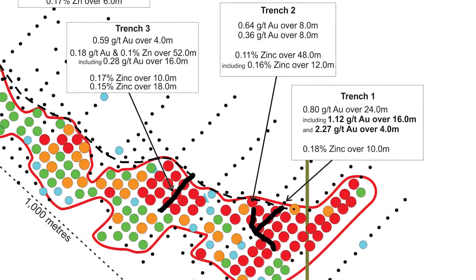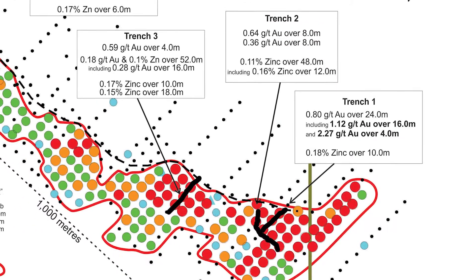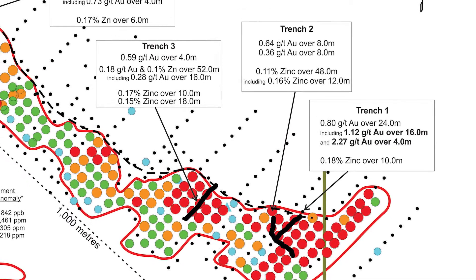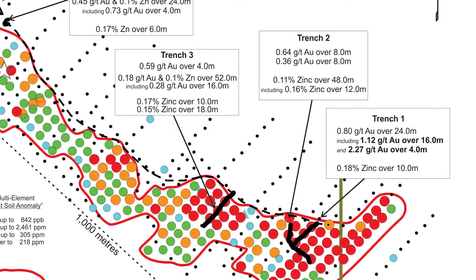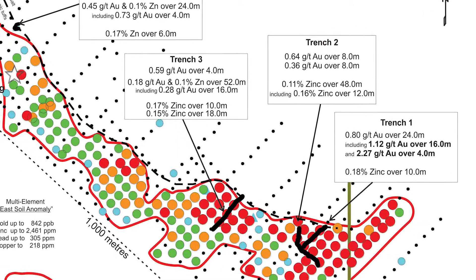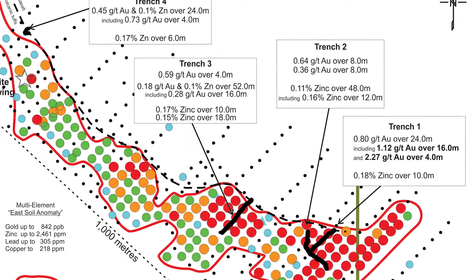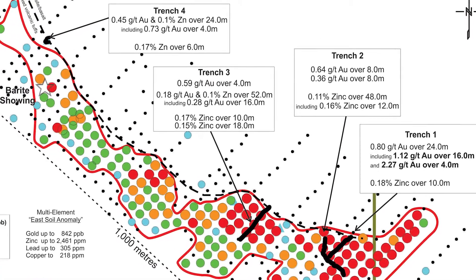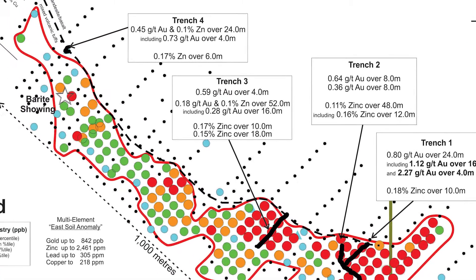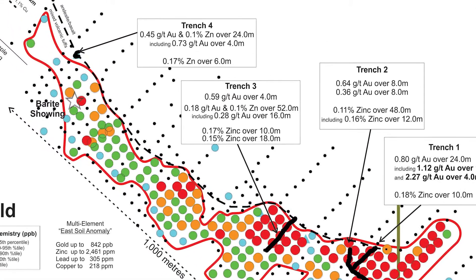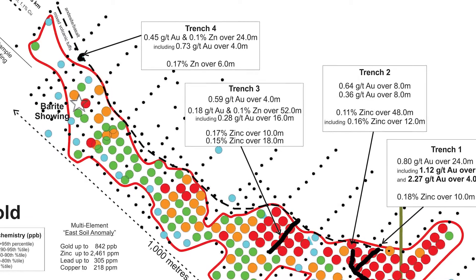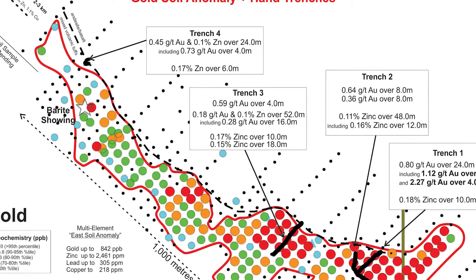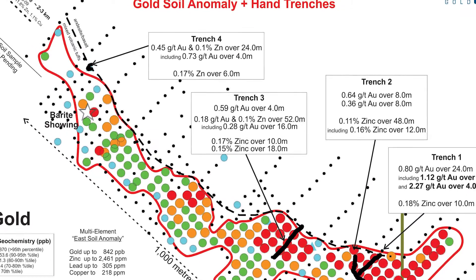Trenches two and three were also well mineralized, and trench four, which was targeted outside of the main anomaly, returned a significant 24-meter intercept of 0.45 grams per tonne gold and is interestingly located proximal to a barite showing that was identified through prior prospecting work.